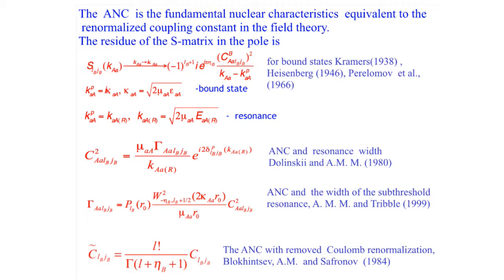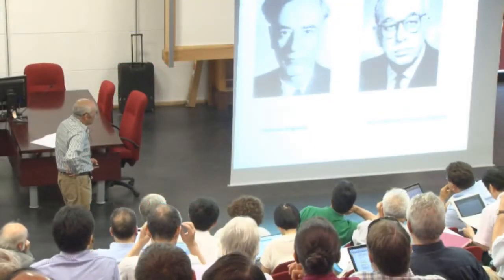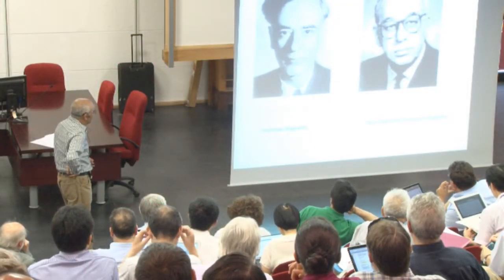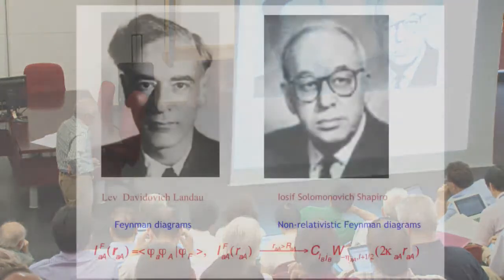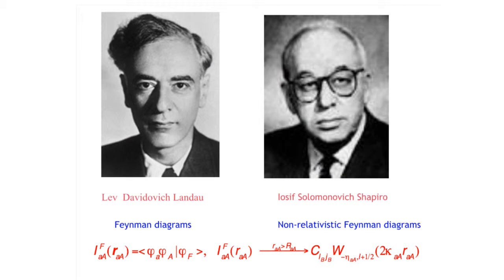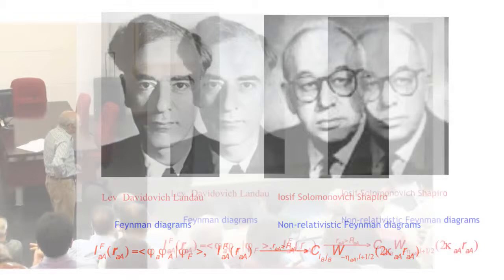These two great Soviet scientists actually revived ANC. The contemporary stage of ANC is due to Landau, Lev Davidovich Landau, and my senior advisor Yosif Smorodinsky. He worked under Landau's guidance. What Landau did was suggest in the 1950s that Feynman diagrams would be the major future tool in elementary particle physics and nuclear physics. He contributed extensively by researching analytical properties and singularities of diagrams. Smorodinsky developed non-relativistic Feynman diagram techniques, and vertex form factors were related with overlap functions or with ANCs.